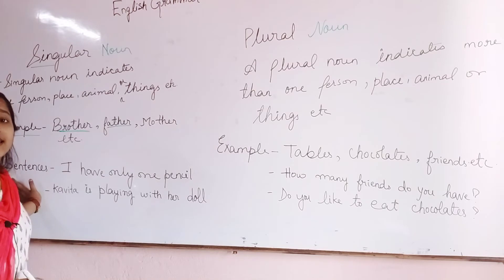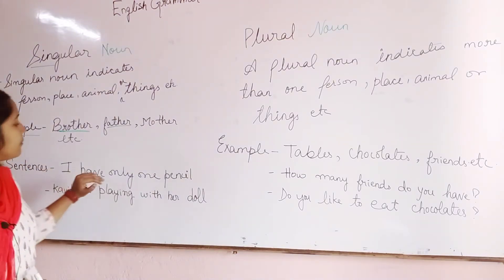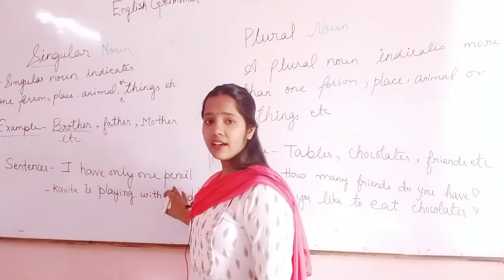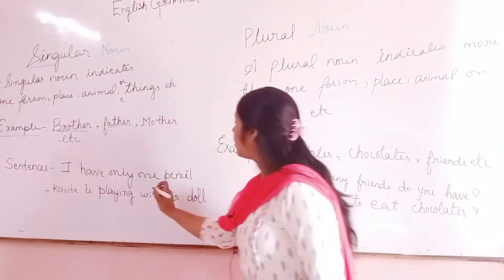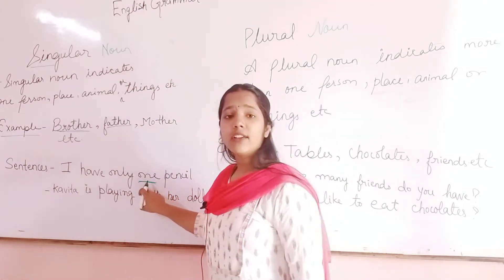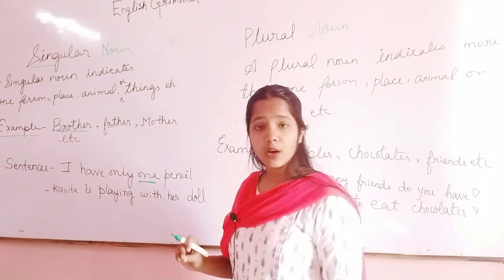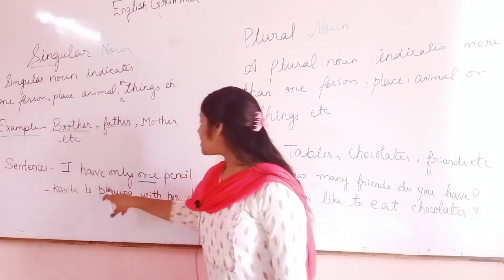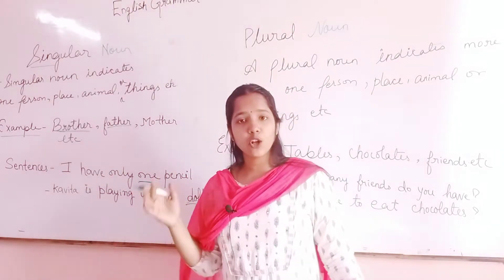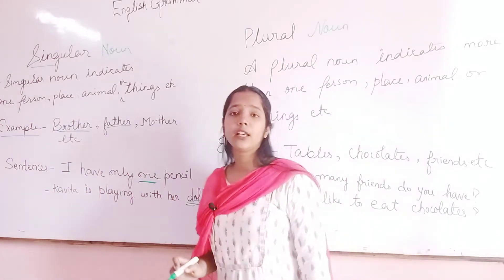Now let us read by sentences so you will know it very clearly. For example: 'I have only one pencil.' Here, one pencil is mentioned, so pencil is a singular noun. Also: 'She is playing with only one doll.' So doll comes under singular noun.